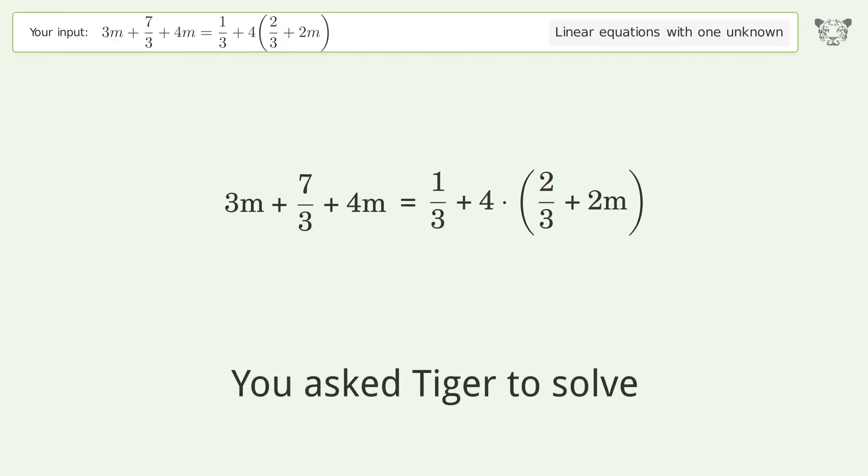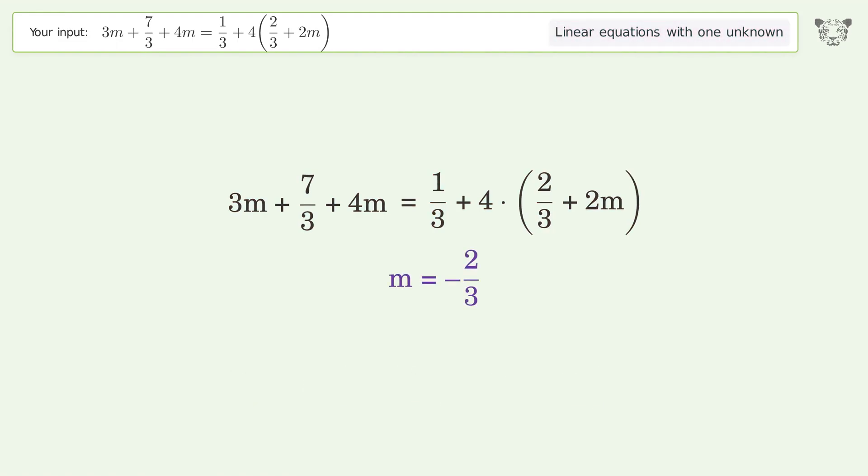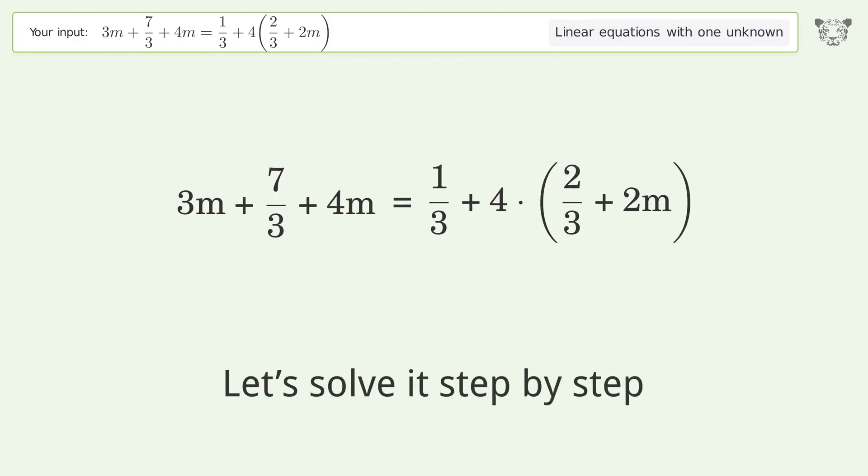You asked Tiger to solve this. It deals with linear equations with one unknown. The final result is m equals negative 2 over 3. Let's solve it step by step.